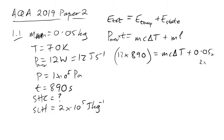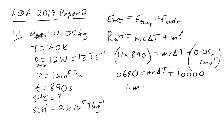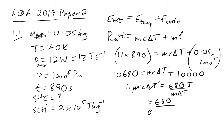So 0.05 times that, 2×75 gives us the mL term, which equals 10,000 joules. Taking 10,000 away from the other side, we end up with mcΔT = 680 joules. All we have to do is divide by mΔT: 680 divided by 0.05 times the temperature difference (going from 70 to 77 Kelvin) gives 1,943. Since our data was given to a minimum of two sig figs, we round to 1,900.